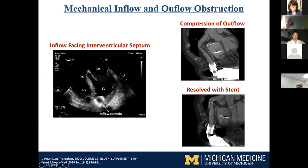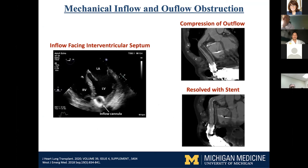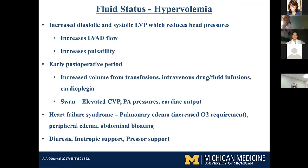For example, on echo you can see the inflow pointing toward the septum — actually sucking on the septum — with the septum bowing out toward the LV, which can also hurt RV function and certainly cause low flow alarms. You can also have material accumulating between the bend relief and the actual graft itself, which can be resolved endovascularly with a stent. It's important to evaluate someone with persistent low flow alarms with echo and CT chest with contrast to check both inflow and outflow.